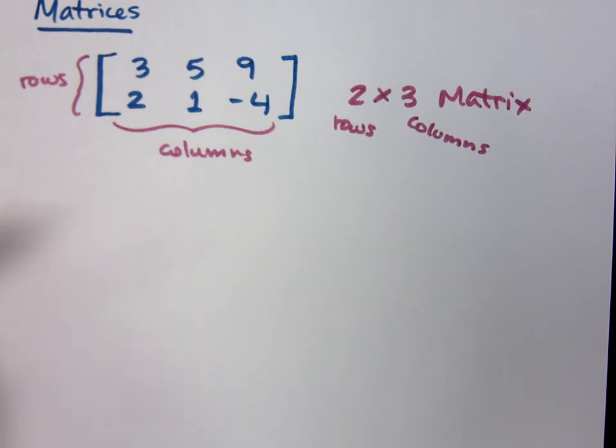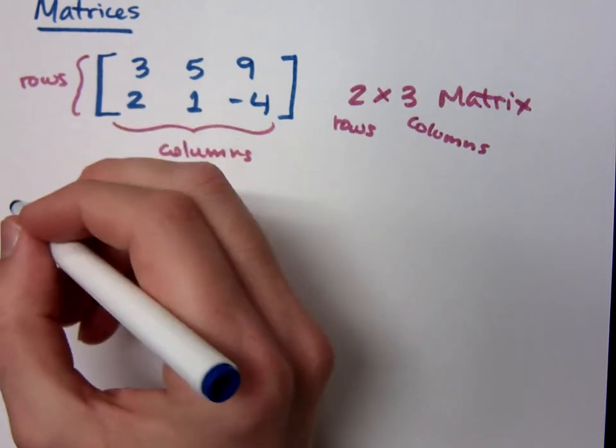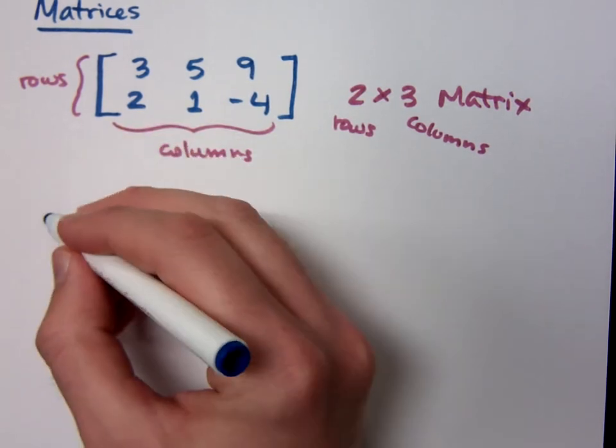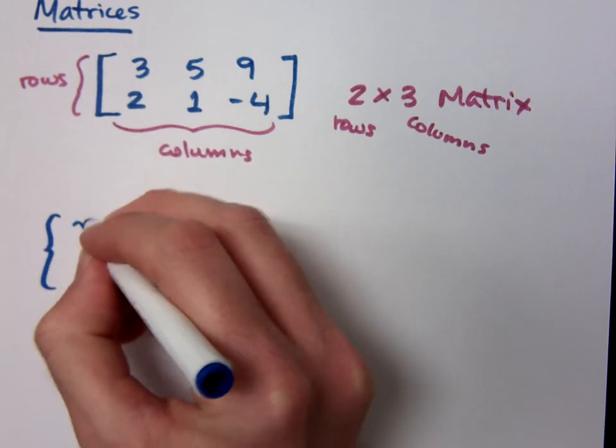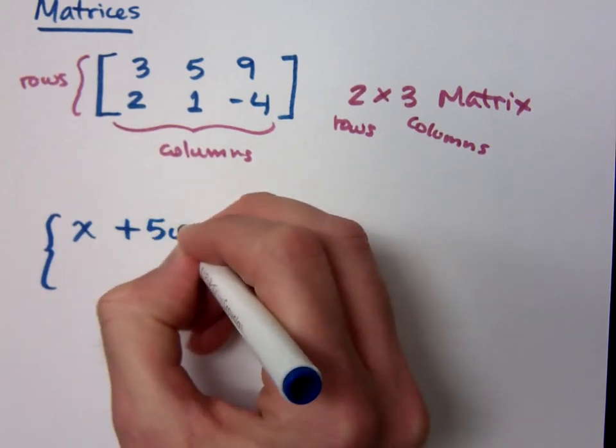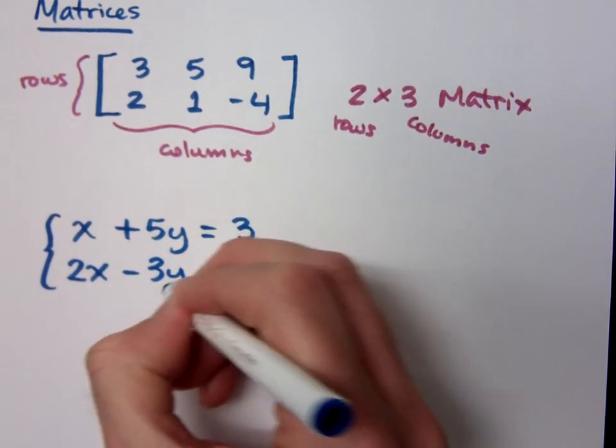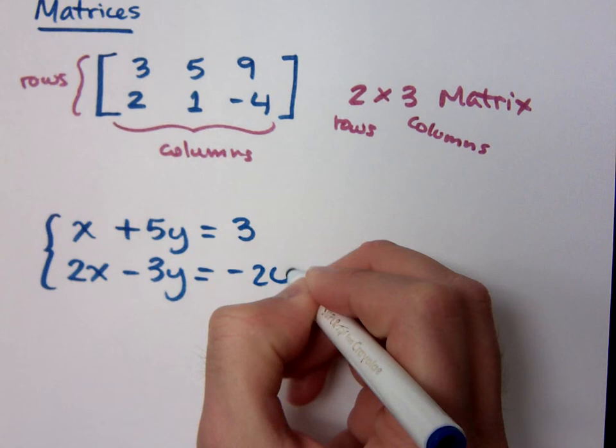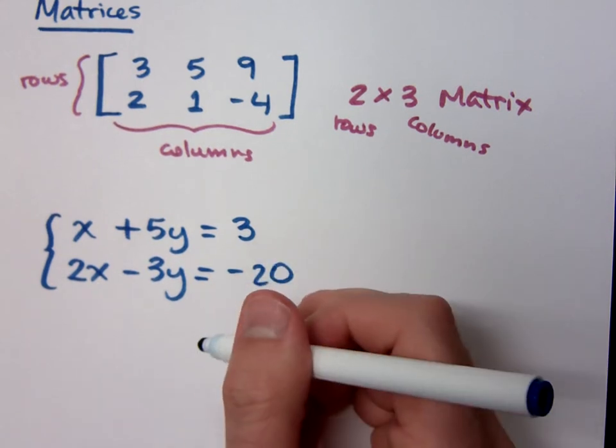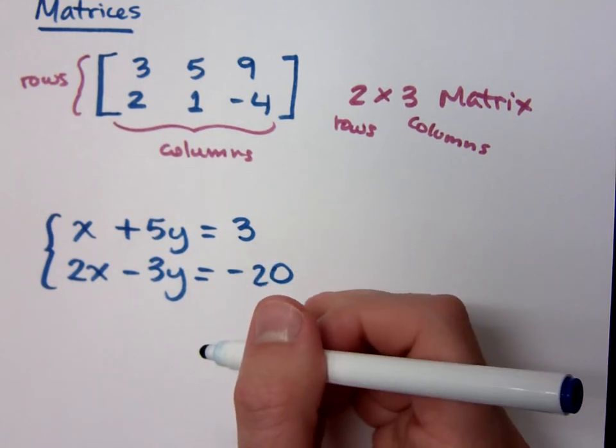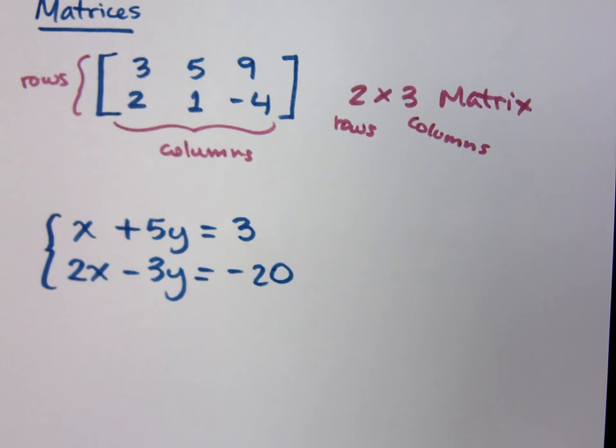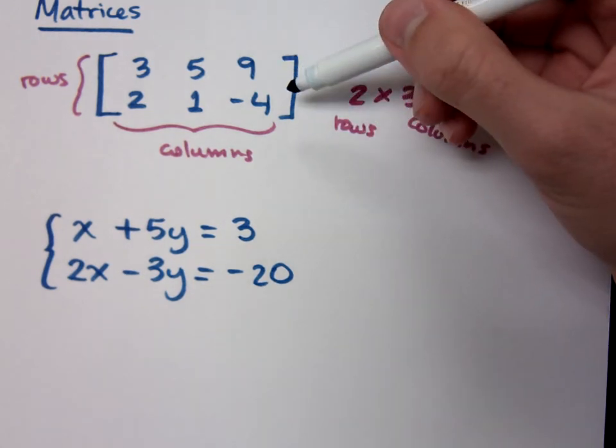Now matrices will allow you to do a lot of neat things. One of those things is to take systems of equations that we've had before and rewrite them. For example, if I were to take this guy right here: X plus 5Y equals 3, and 2X minus 3Y equals negative 20. I can rewrite this in a matrix. The great thing about a matrix is it just looks at the coefficients.